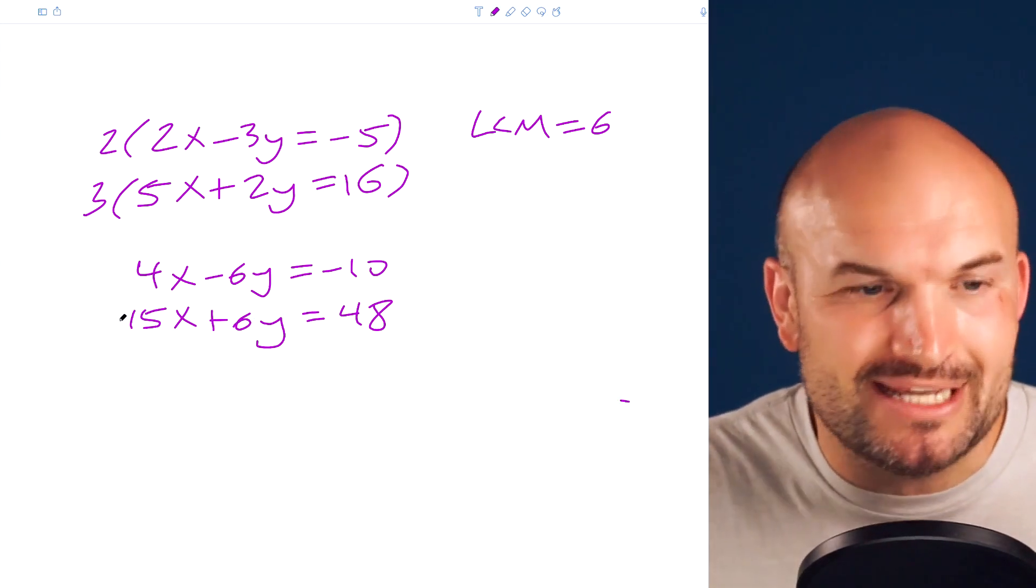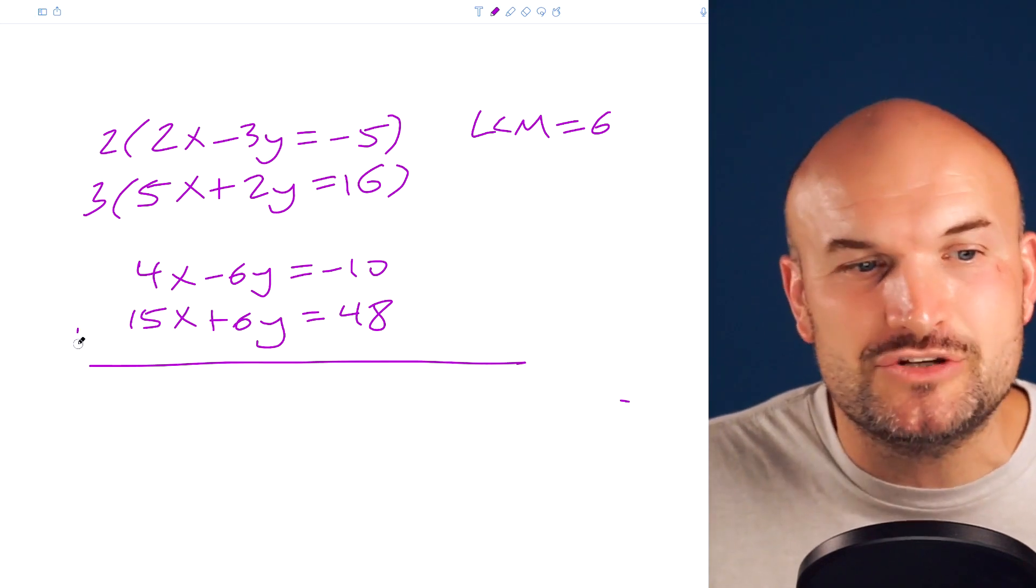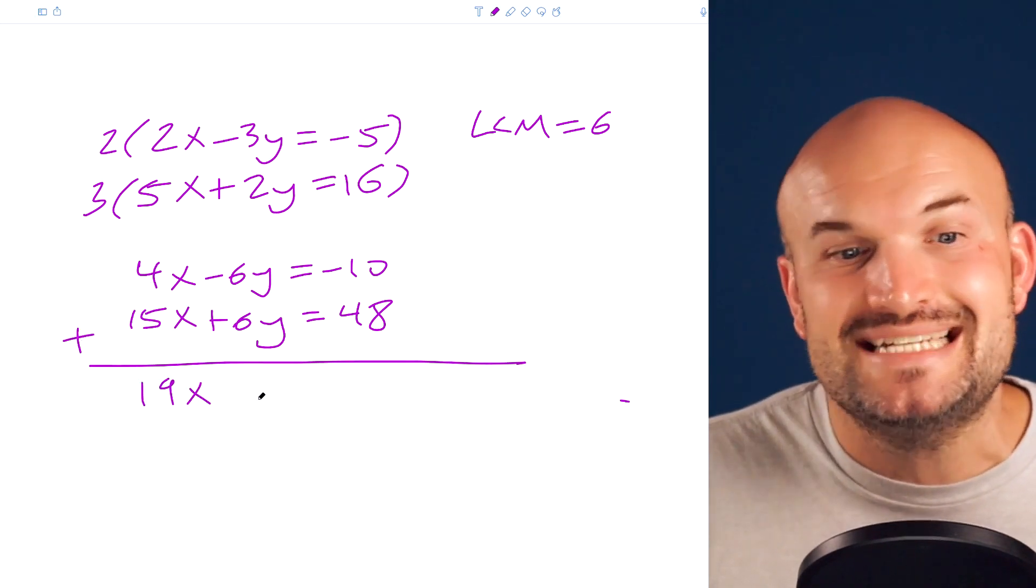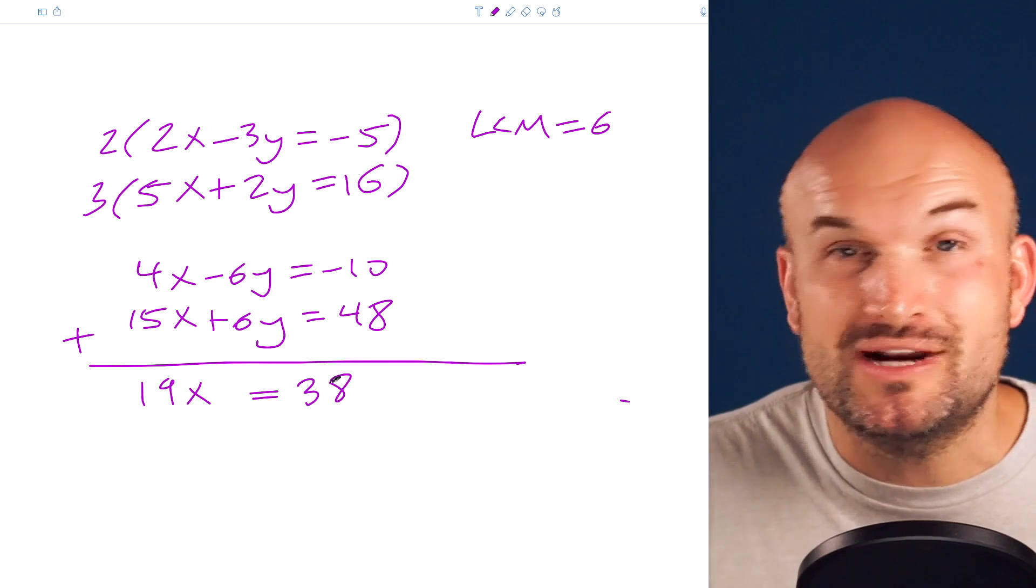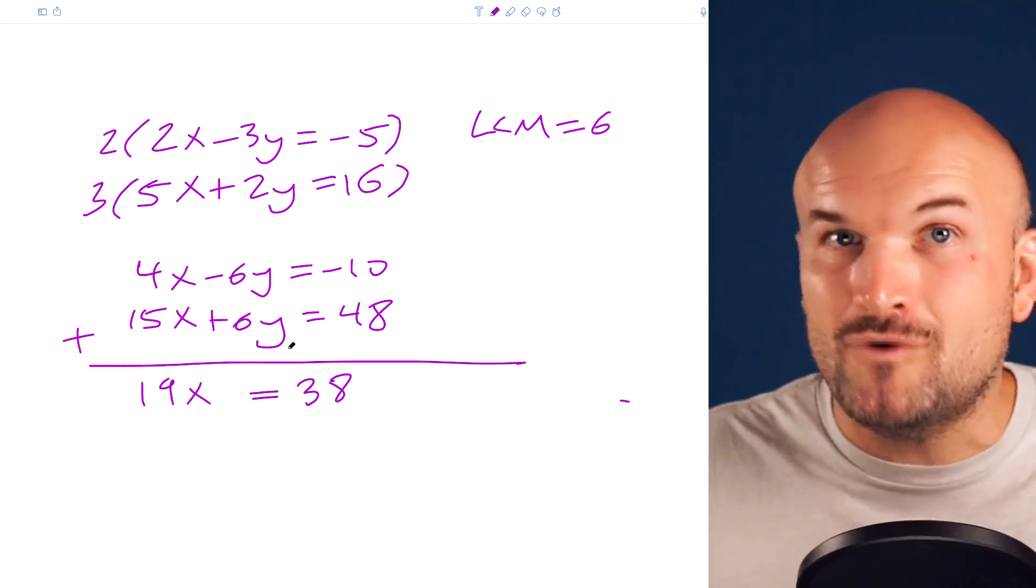Now, if you're curious on what the next step would be, you're just going to have to go ahead and add the two equations. And what you would get, it'd be a 19x equals a positive 38. And then you can go ahead and solve for x. But that is where most students are going to make mistake number 3.